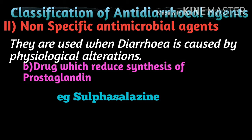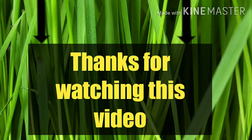To summarize what we covered: specific anti-diarrheal agents include antibacterials — ciprofloxacin, levofloxacin, ofloxacin, norfloxacin, and cotrimoxazole — and anti-protozoals — metronidazole, ornidazole, tinidazole, and secnidazole. Non-specific antimicrobial anti-diarrheal agents include anticholinergics like atropine, opioids like morphine and loperamide, and inhibitors of prostaglandin synthesis such as sulfasalazine.